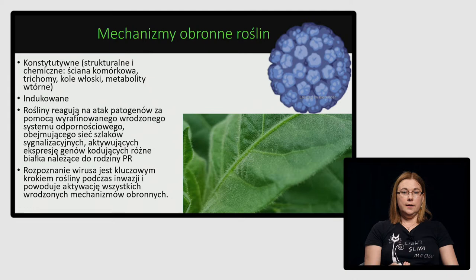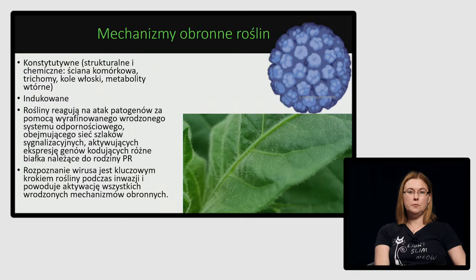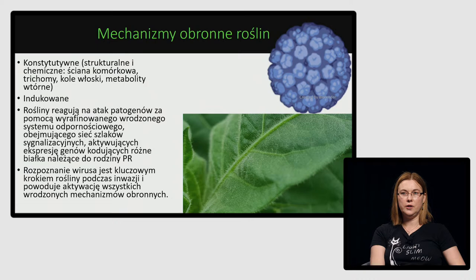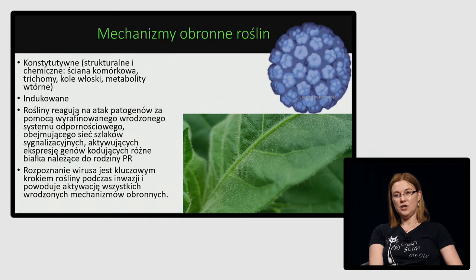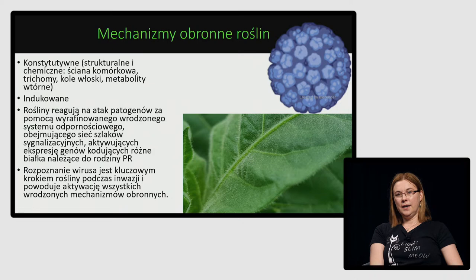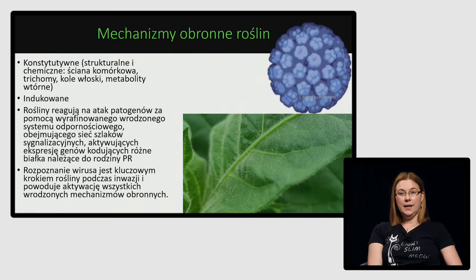Przejdźmy do mechanizmów obronnych roślin. Rośliny nie są zupełnie bezbronne – mają bardzo rozwinięty system obronny. Wynika to z tego, że w przeciwieństwie do zwierząt nie mogą uciec przed stresem, a są bombardowane różnymi stresami – zarówno biotycznymi, jak i abiotycznymi, a patogeny mogą atakować jednocześnie lub jedne po drugich. Roślina na drodze ewolucji wytworzyła bardzo dobre mechanizmy obronne.